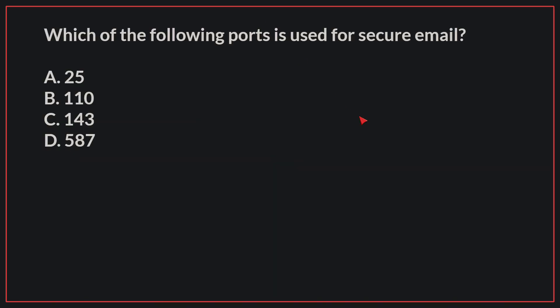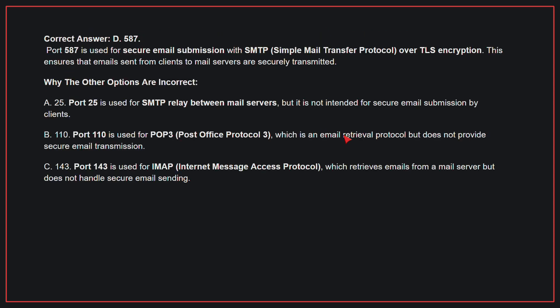Which of the following ports is used for secure email? The correct answer is D, 587. Port 587 is used for secure email submission with SMTP over TLS encryption.